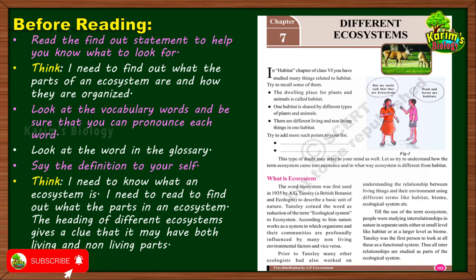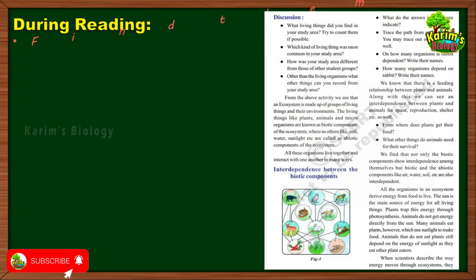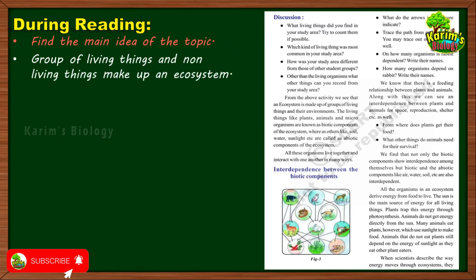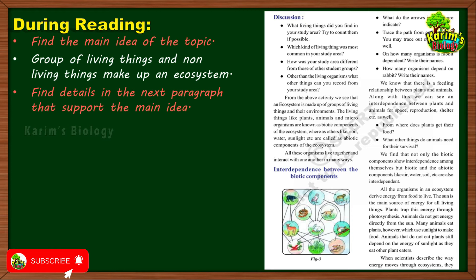Now let us find out what you have to do during the reading process. First, find the main idea of the topic. After reading one or two paragraphs, you will identify the basic main idea — in this case, 'a group of living and non-living things makes up an ecosystem.' Then find details in the next paragraphs that support the main idea; further explanation will be given in those paragraphs.